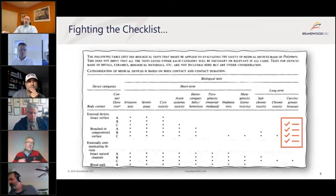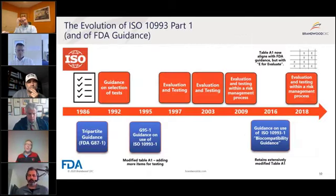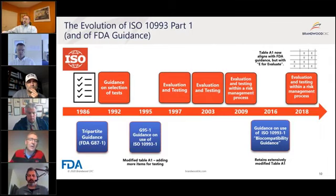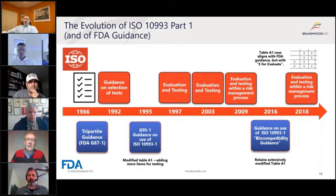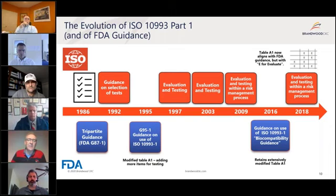Here's that checklist that came out of the initial tripartite guidance, put into the ISO document. Over 20-something years of work on refining the documents — along the top are all the times this ISO document got revised, and then along came the FDA with its own guidance. You'll notice that it starts off talking about selecting tests, and then gradually it gets away from testing to something we call evaluation and risk management.